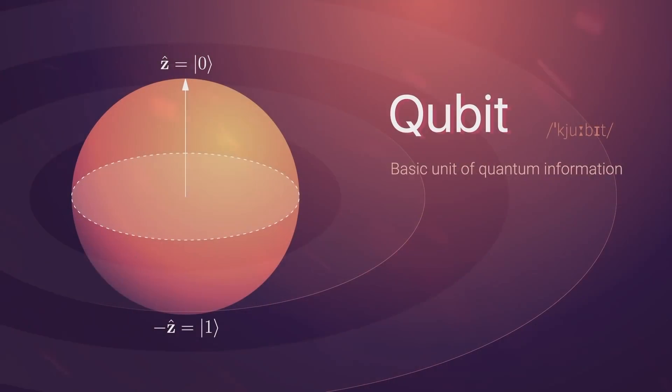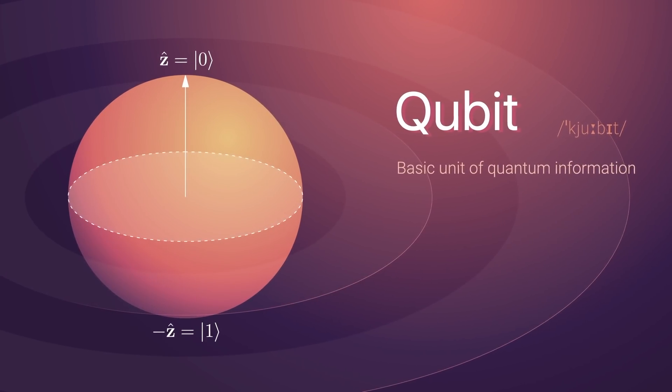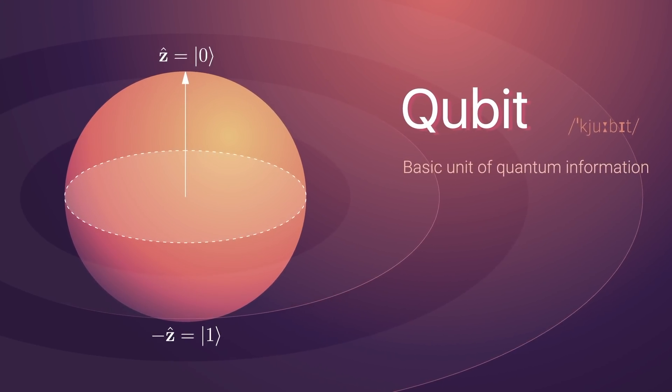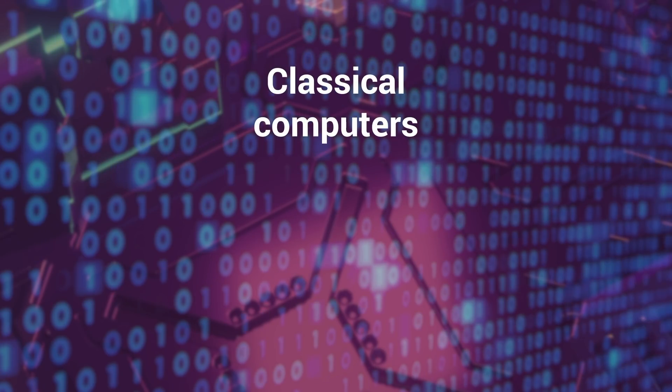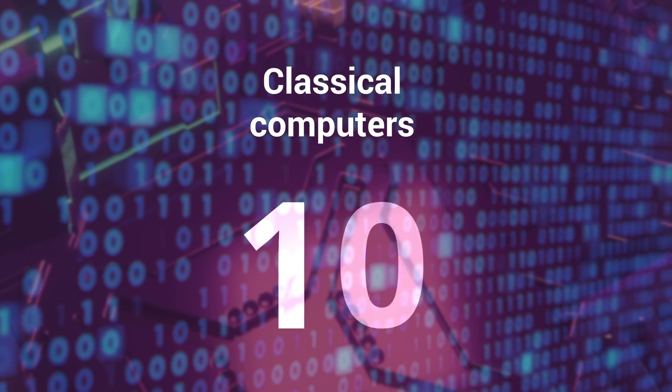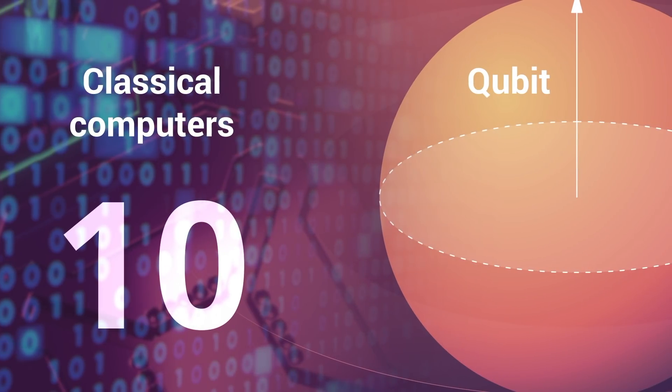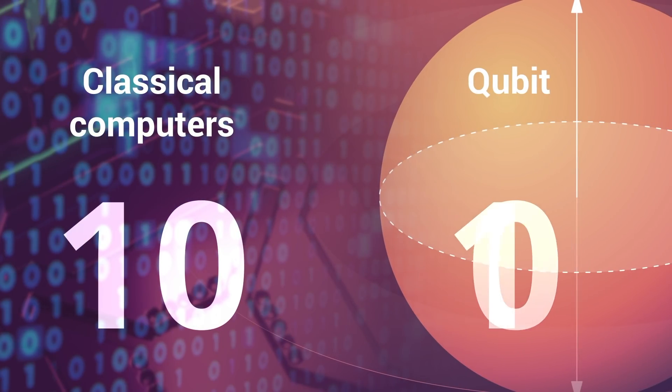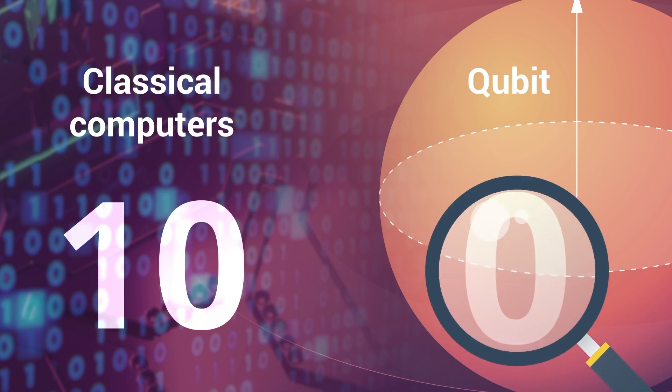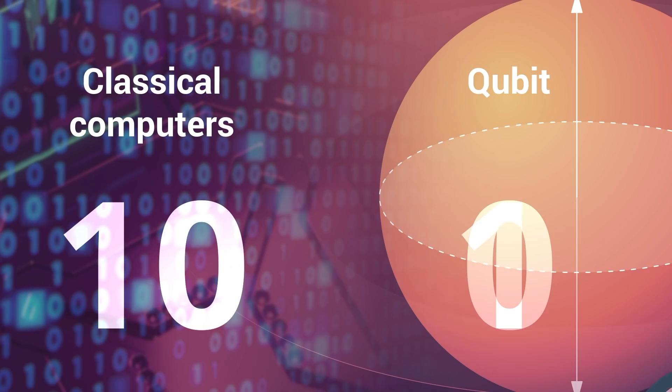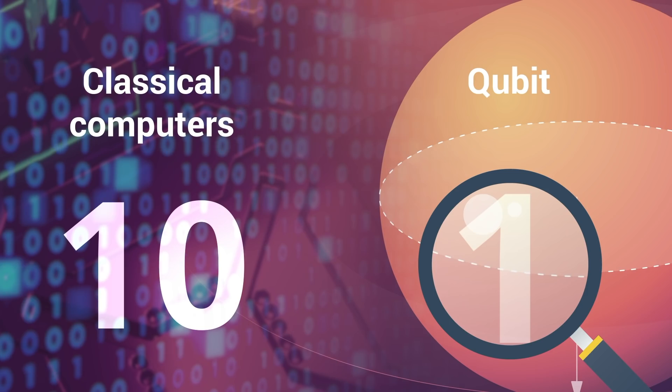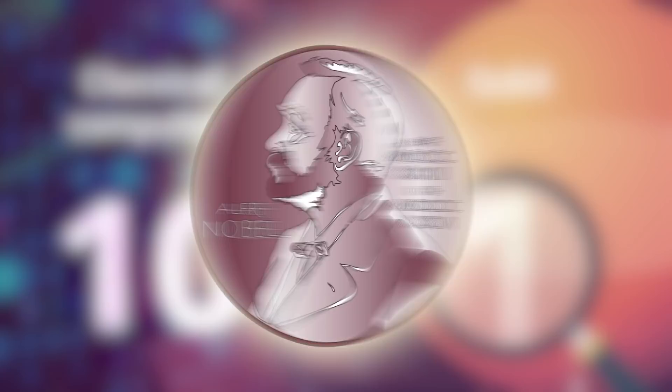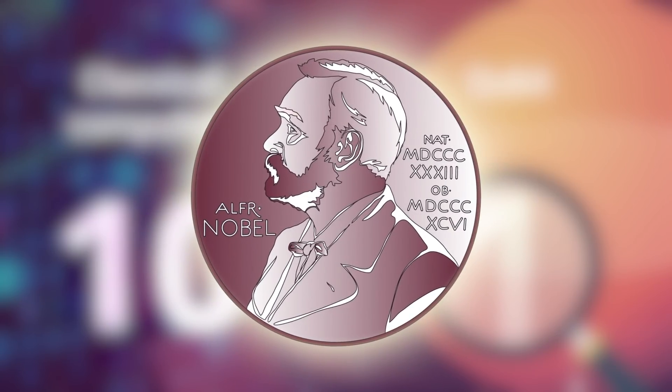The particles at the center of quantum computers can also be in two positions at once. While classical computers use bits, ones and zeros, qubits can be one and zero at the same time. Observing a qubit makes it collapse into a position. No one knows why this happens. If you can figure it out, there's a Nobel Prize for you.